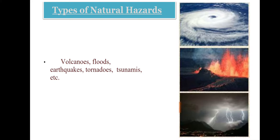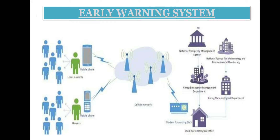Here is the early warning system for flood, drought, fire, earthquake and tsunami. It can be defined as a set of capacities needed to generate and disseminate timely and meaningful warning information of possible extreme events or disasters — like flood, drought, fire, earthquake, and tsunami — that threaten people's lives. The purpose is to enable individuals, communities and organizations to prepare and act appropriately and in sufficient time to reduce the possibility of harm, loss or risk.